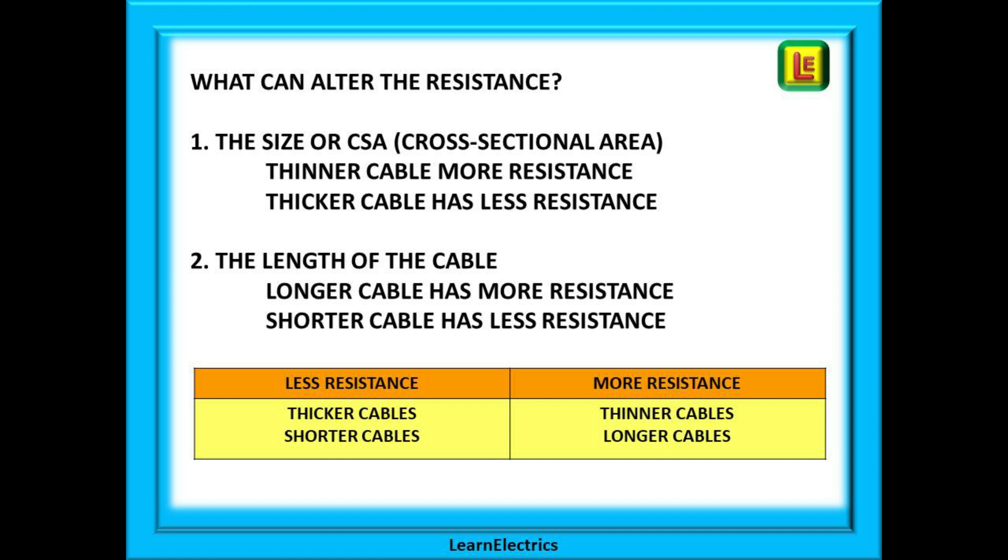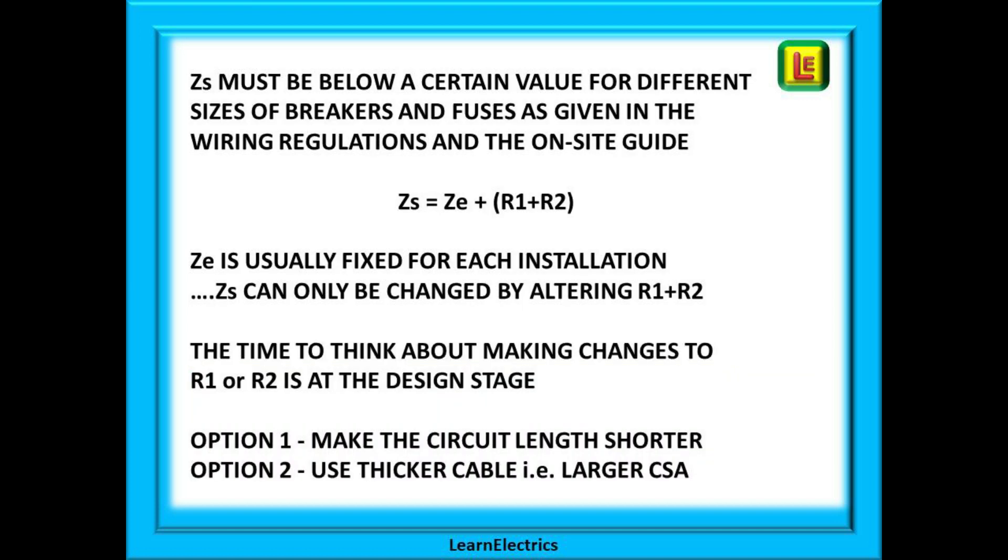The best solution is to have thick cables on short runs, but we also have to take into account the cost of the copper cable itself. Copper is not cheap, so we need to have the cable size big enough to carry the expected fault current without overheating the cables, but not so big that we are paying for extra copper that we do not need. This is why there are tables giving maximum values of ZS which includes R1 plus R2. ZS must be below a certain value for different sizes of breakers and fuses, and these are given in the wiring regulations and the on-site guide.